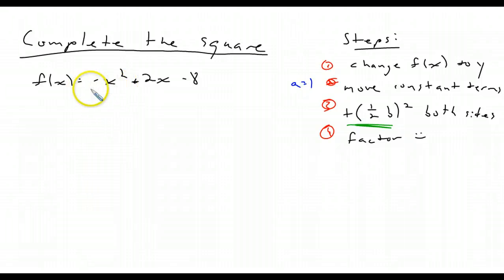For this example, we want to change f of x to y, move over our constant terms. So I can say this is y plus 8 equals negative x squared plus 2x. Then this is not a 1, it's a negative 1, so I need to factor out this negative right here.